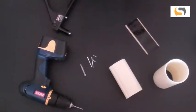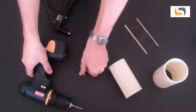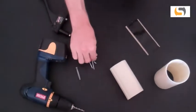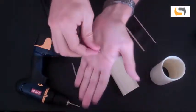The second method uses self-tapping screws and requires the following: a hand drill with a phillips head bit and 1/8th inch small self-tapping screws.